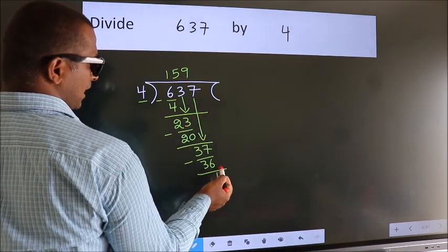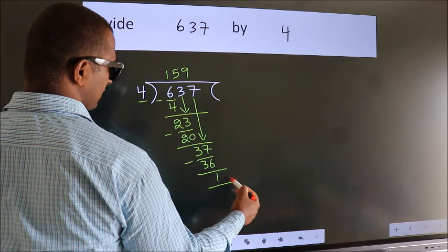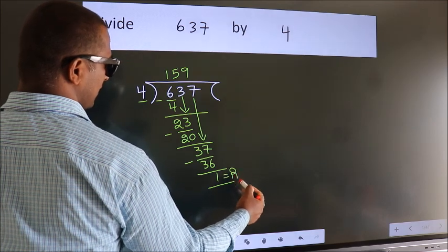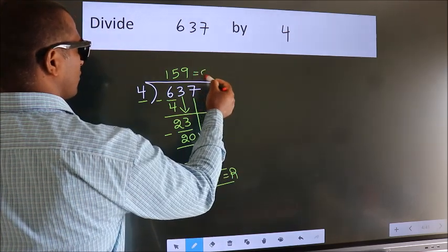No more numbers to bring down, so we stop here. This is our remainder. This is our quotient.